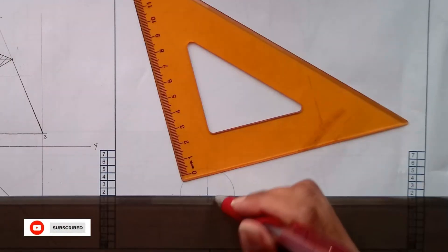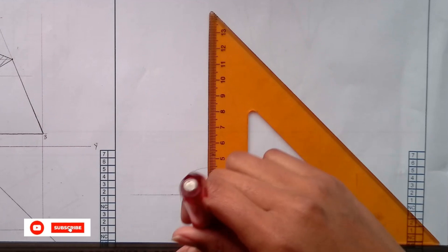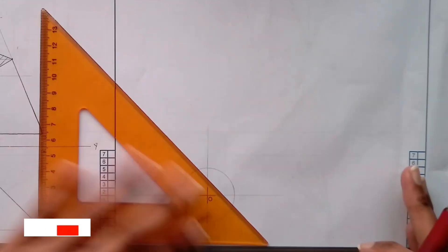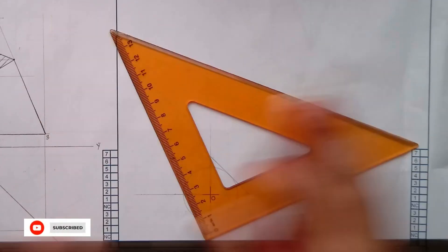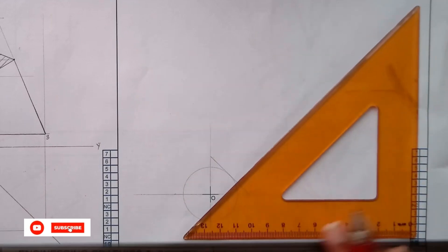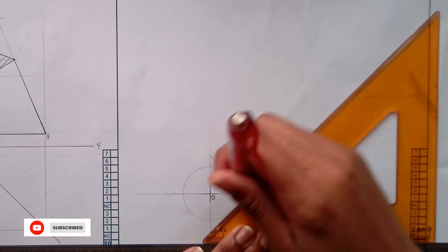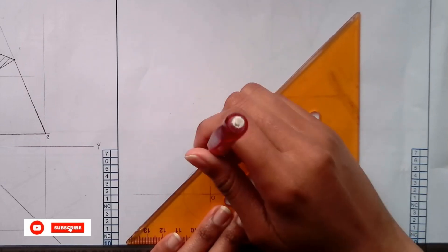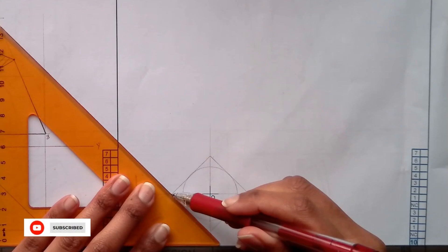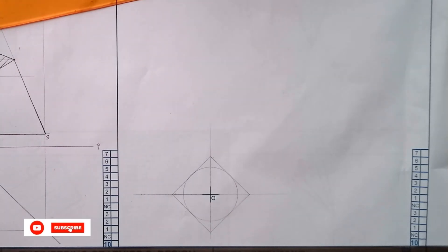Then you will use your 45 to draw around the square, drawing tangents and just extending these lines. Remember you're using construction first. There is your square.